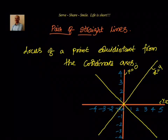One line which is x equal to y. You can see that any point on this line will have x-coordinate equal to y-coordinate. Or we have another line in which x equal to minus y.